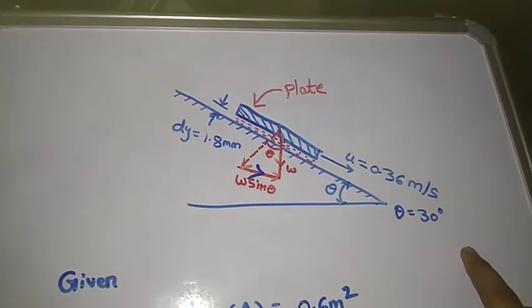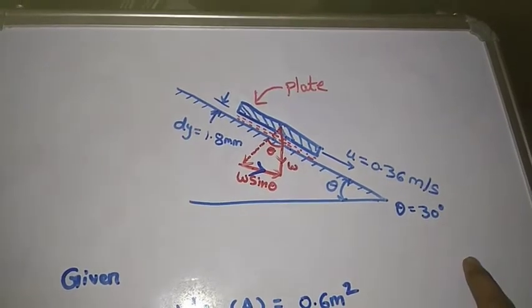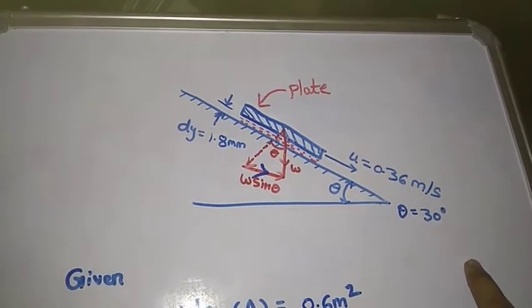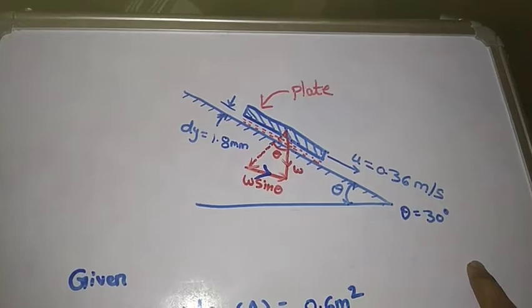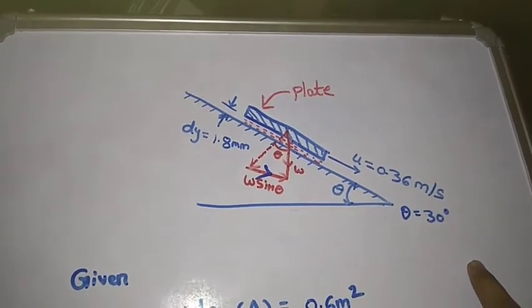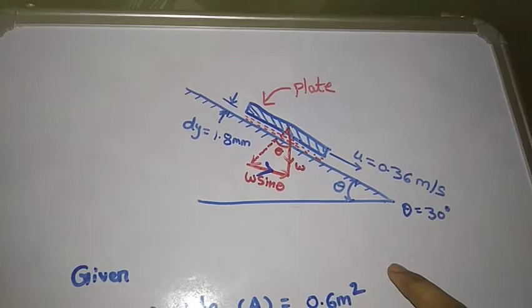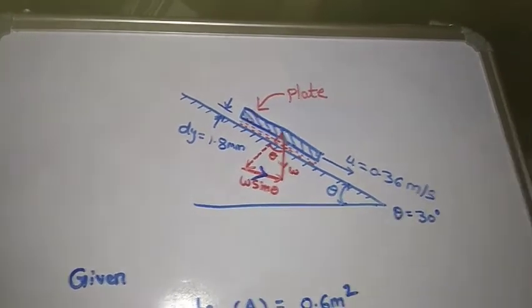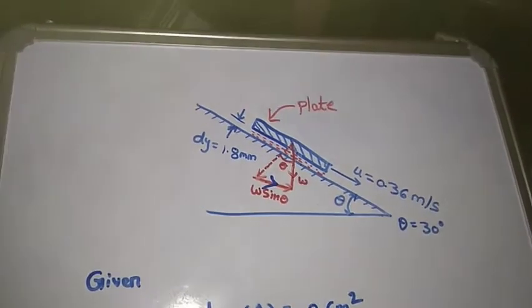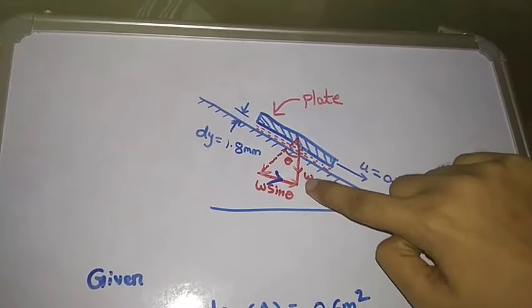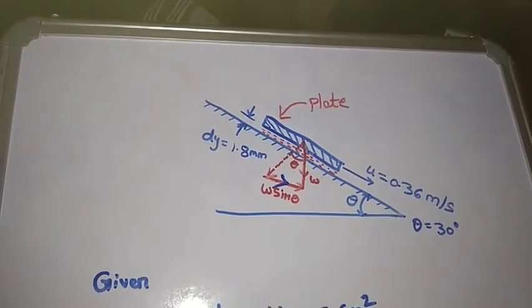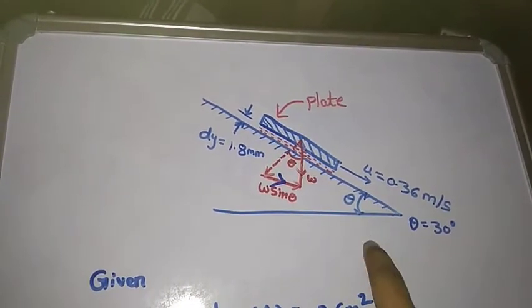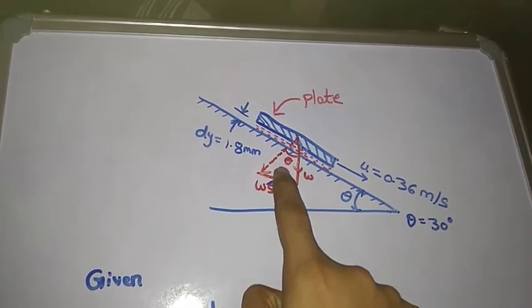Here, the plate velocity is 0.36 m/s and the gap between the inclined plate and the plate is 1.8 mm converted into meters. Next, the plate weight is 280 N, and this weight acts vertically downwards.